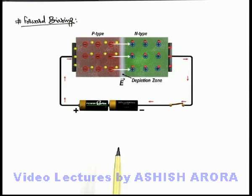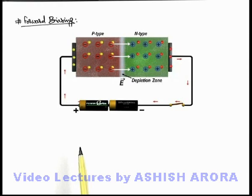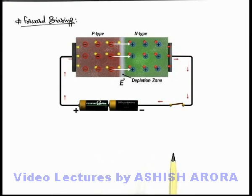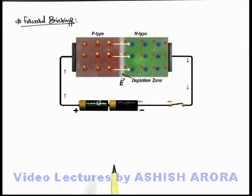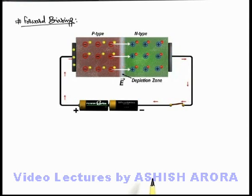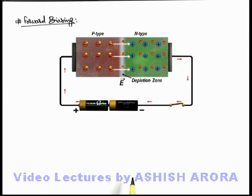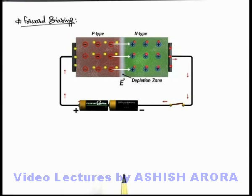Further, holes are transferred from the left side of the p-type semiconductor to the zone, and electrons from the right side of the n-type semiconductor, resulting in a continuous flow of electrons and holes. The charge carriers are supplied by the battery from one side to the other, and since only free electrons flow through the connecting wires, a constant clockwise current flows in the system. This is how current flow takes place through the p-n junction when it is forward biased.